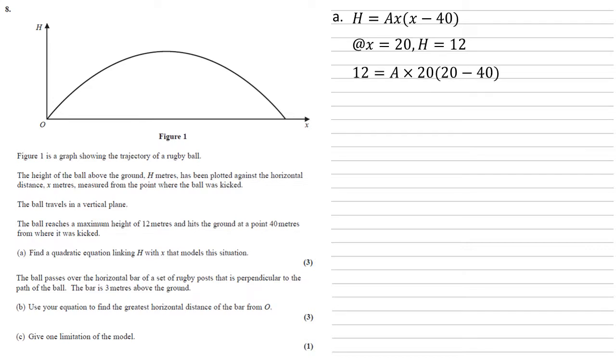So if we put them in, then 12 is equal to a times 20, times 20 minus 40. 12 is equal to minus 400a, so a is equal to minus 3 over 100, which gives us an equation of h equals minus 3 over 100 times x, times x minus 40.